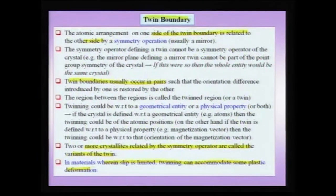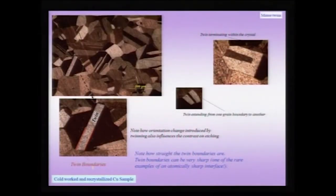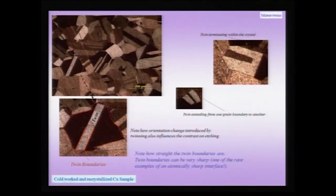To summarize: a twin can be with respect to a geometrical entity or a physical property, and one side of a twin boundary is related to the other side by a symmetry operation which is not the symmetry operation of the crystal. This symmetry operation could typically be a mirror, but it could also be an inversion or a rotation. Looking at an actual micrograph, this is a grain within which you can clearly see two twin boundaries. The region between these two boundaries is the twin, and since these are two-dimensional interfaces, the plane extends into the slide. One twin boundary introduces a misorientation which is cancelled by the other. This sample is cold-worked and recrystallized copper wherein you can see many twins in the structure.